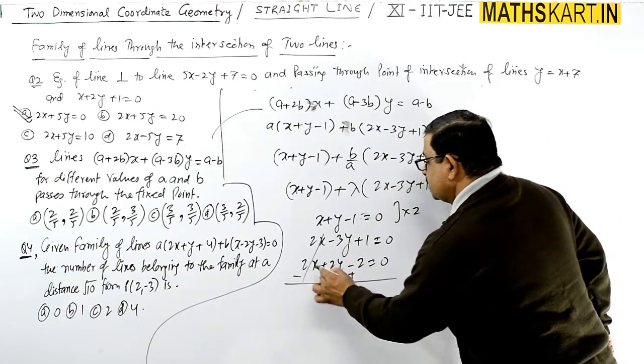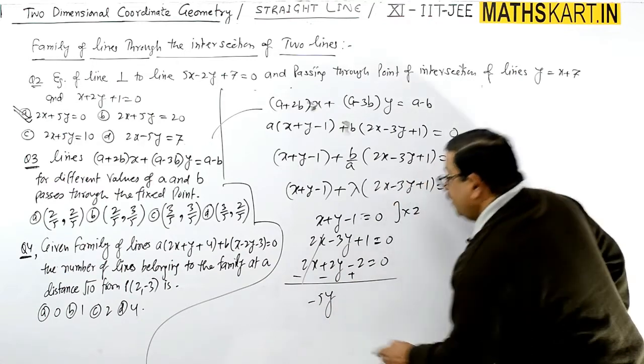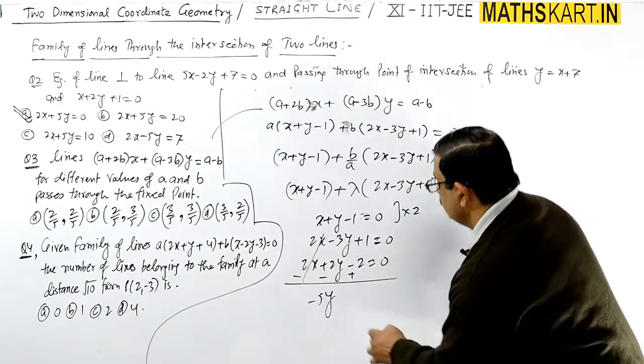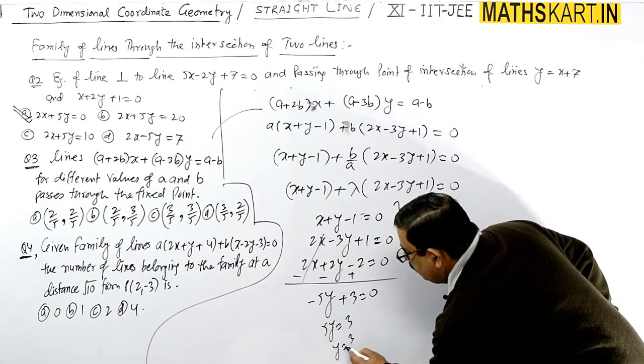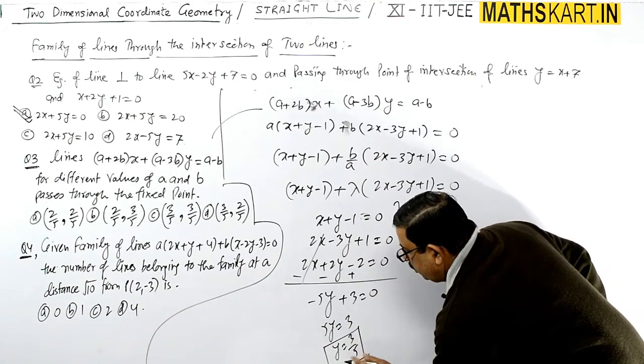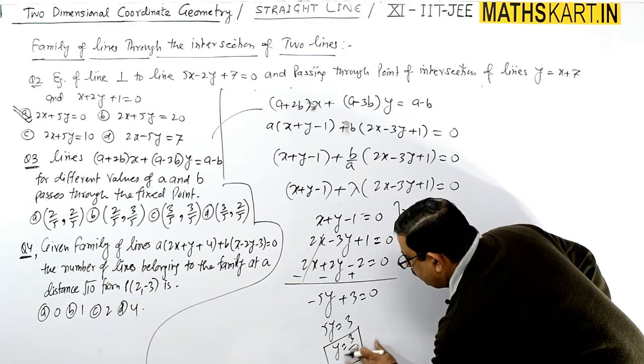When you subtract, signs change and terms cancel. We get -5y-5y = 3, so 5y = 3. Therefore y = 3/5. The y-coordinate is 3/5.